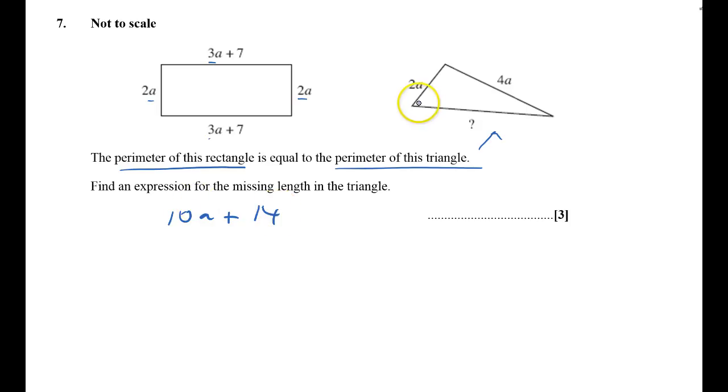What I've got here, it's got to end up being the same. So it's going to end up being 10a, but I've only got 6a at the moment, so I'll definitely need to have 4a there, and I need 4a plus 14.